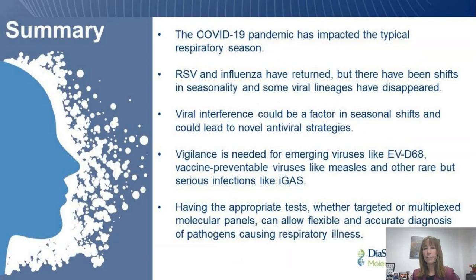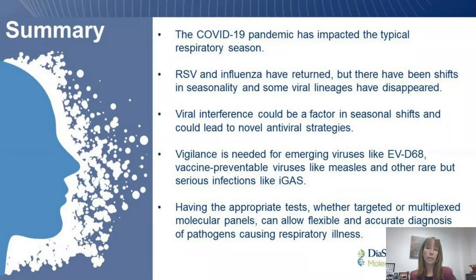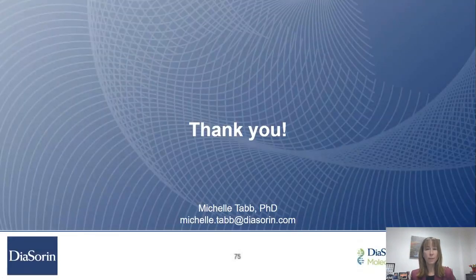In summary, the COVID-19 pandemic has definitely impacted the typical respiratory season. RSV and flu have returned, but there are shifts in seasonality, and some viral lineages like flu B Yamagata have disappeared. Factors like viral interference may have contributed to seasonal shifts and could lead to novel antiviral strategies. Vigilance is needed for EVD-68, vaccine-preventable viruses like measles, and invasive group A strep. Having the appropriate tests — whether targeted or multiplexed, syndromic or standalone — allows for the flexibility to meet patient testing needs for accurate diagnosis of pathogens causing respiratory illness. Thank you very much for your attention today, and I welcome any of your questions.